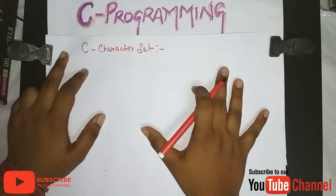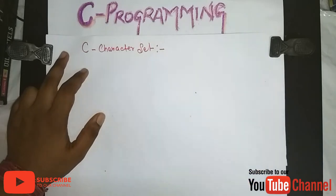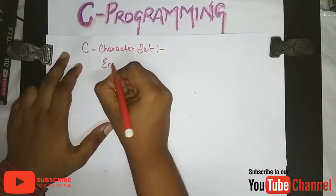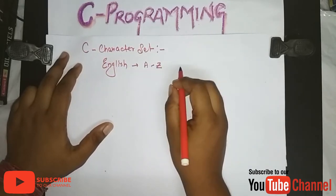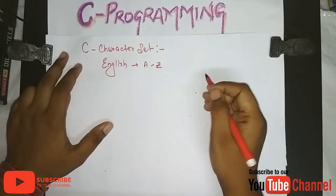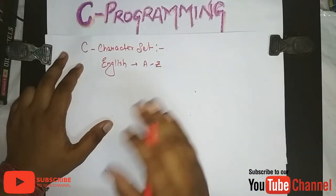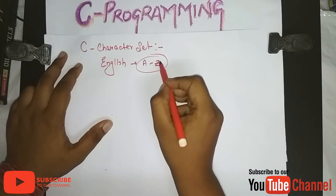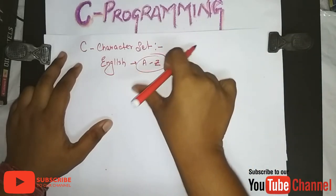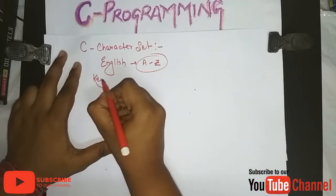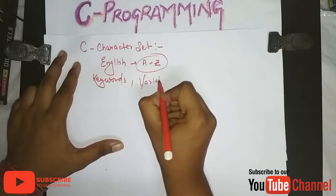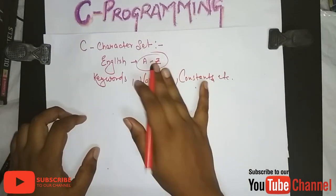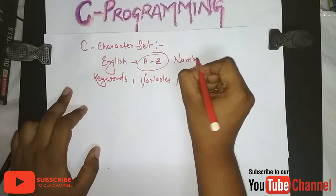What is a character set? Basically any language, whether English or Hindi, requires some character sets to build words. In English, A to Z is the character set by which every word is built. Similarly in C, A to Z is the character set used. We use various keywords, variables, constants, and also include numbers from 0 to 9.